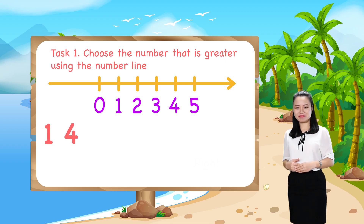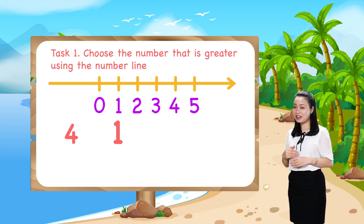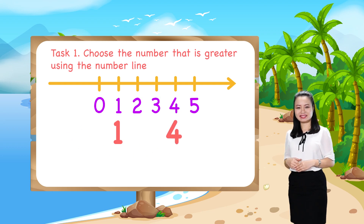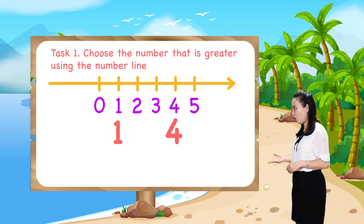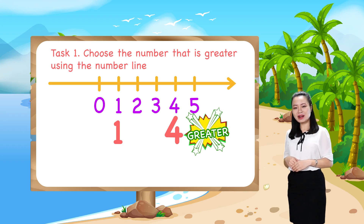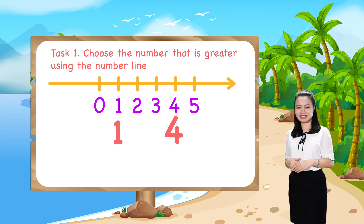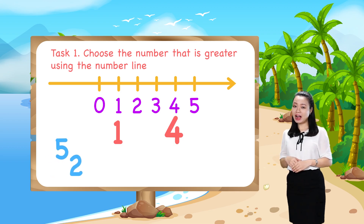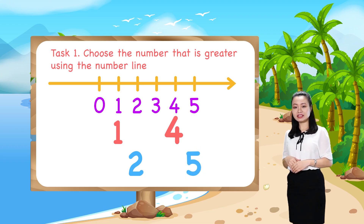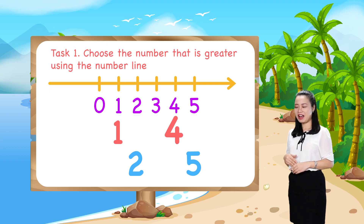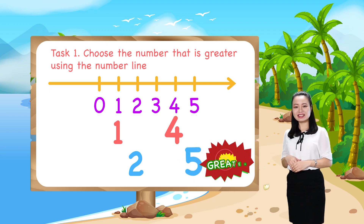For the pair 1 and 4, number 4 is to the right of number 1, so 4 is greater than 1. Next, for the pair 5 and 2, number 5 is to the right of number 2, so 5 is greater than 2.